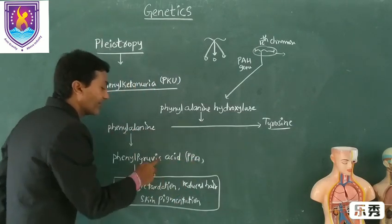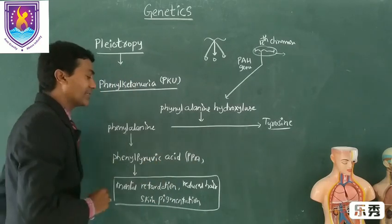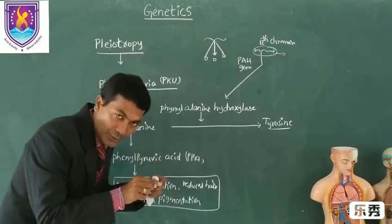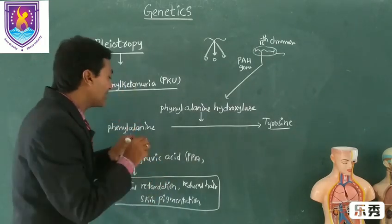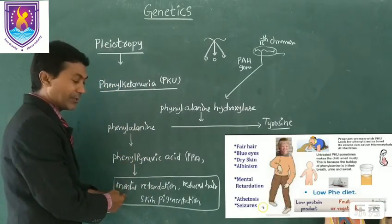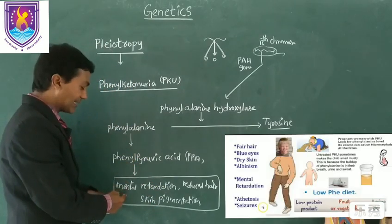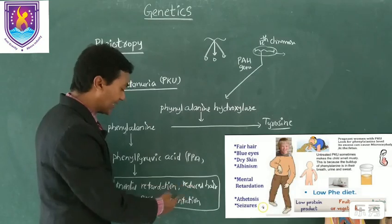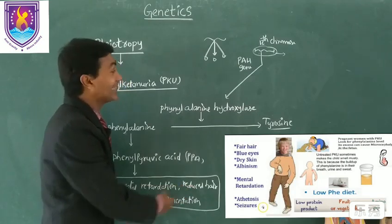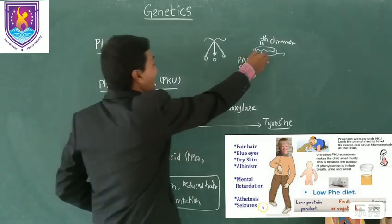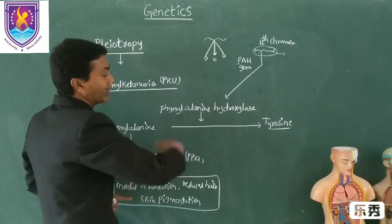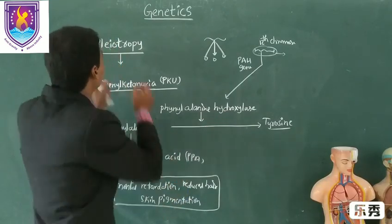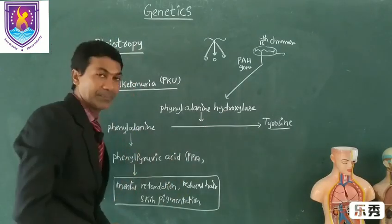Phenylpyruvic acid is dangerous when it accumulates in the body tissues, which leads to phenotypic traits such as mental retardation and reduced skin pigmentation. So a single gene is responsible for different phenotypic traits — this is called pleiotropy.